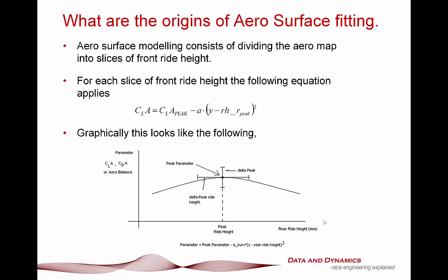So what are the origins of aero surface fitting? The whole idea is that we're effectively taking our right-height sensitivity maps and dividing them into front right-height slices. For each of those front right-height slices, we're applying a second-order curve surface fit. We're assuming there's going to be a peak value in that right-height slice, and that the maximum is going to happen at a certain rear right-height value. The second-order curve fit really is the workhorse of curve fitting, and combined with linear curve fitting, second-order surface fitting gives you a bit more flexibility.